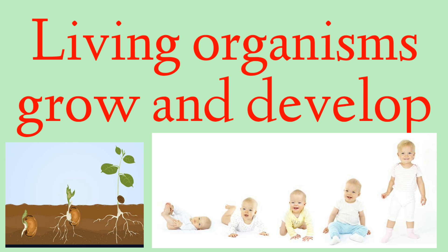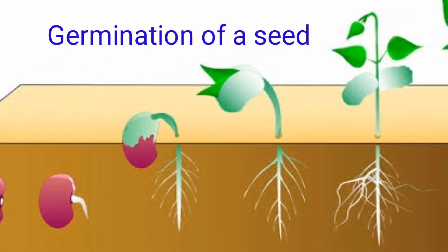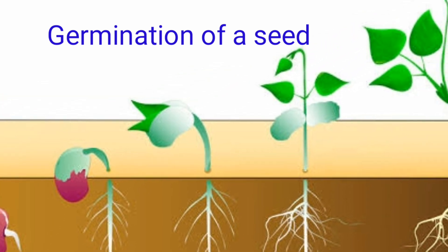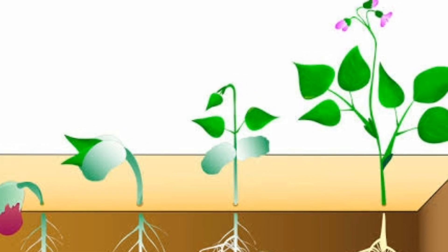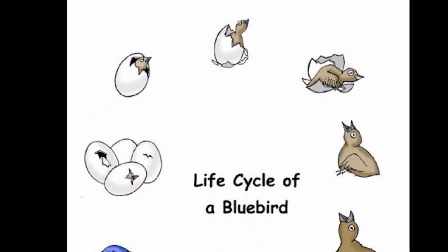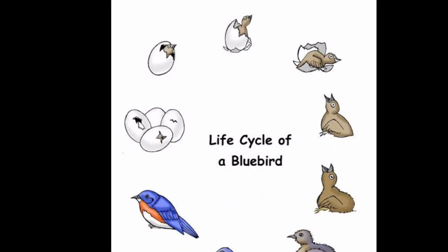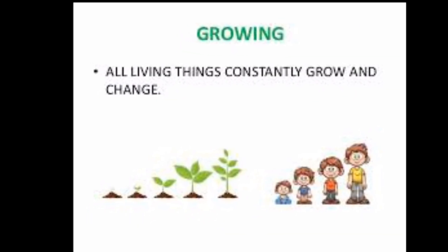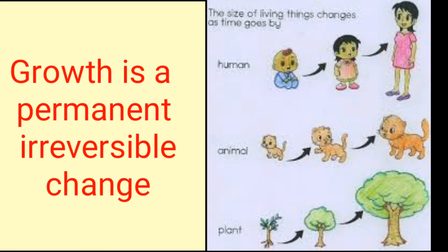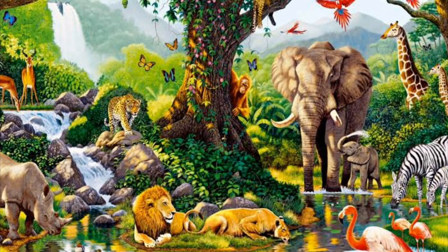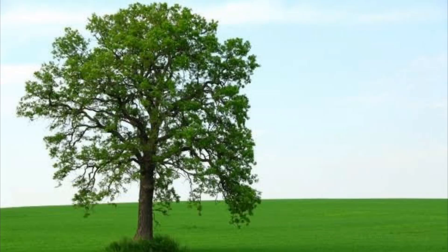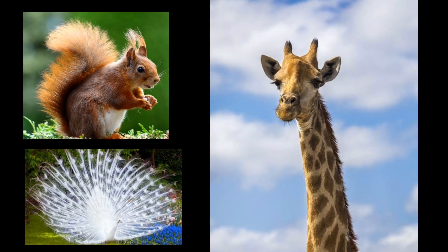Now let us come to the next topic — leaving things grow and develop. They develop from the energy they get from food. You can see the picture of germination. A seed germinates to form a big plant or tree. A baby bird hatches out of an egg to form an adult bird. Growth can be defined as a permanent irreversible change in the size of an organism as it matures. Plants grow all throughout their life whereas animals stop growing after a certain age.